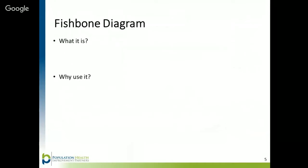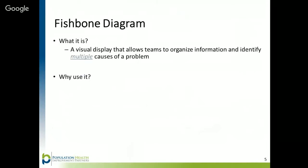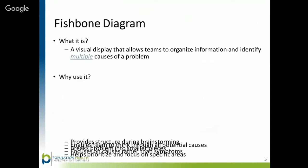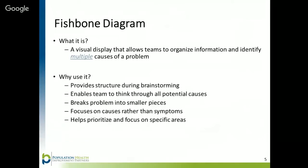The Fishbone Diagram, also known as the Ishikawa Diagram, is a tool used to identify root causes. It is a visual display that allows your team to organize information and identify multiple underlying causes of a problem. It is used to provide structure to brainstorming sessions, enable your team to think through all potential causes of a problem, break problems into smaller pieces, focus on causes rather than symptoms, and prioritize and focus on specific areas.